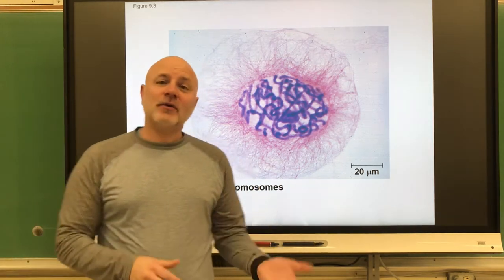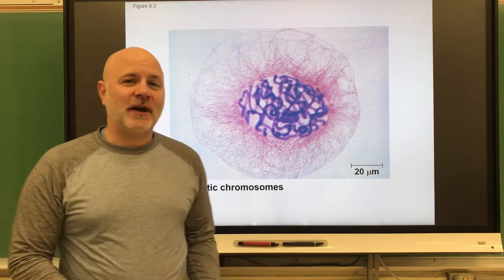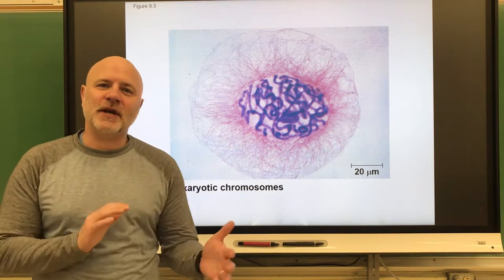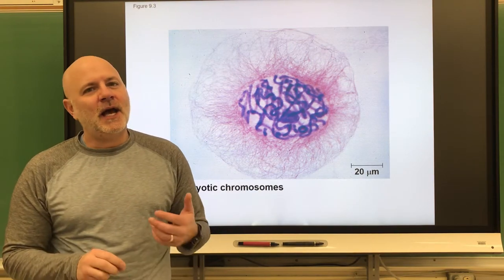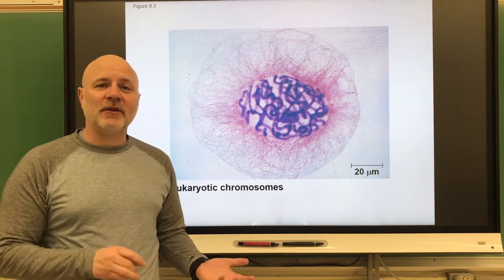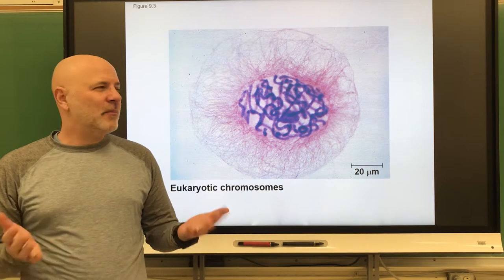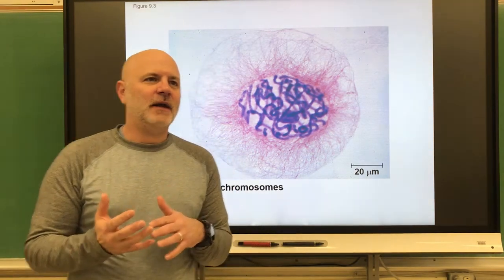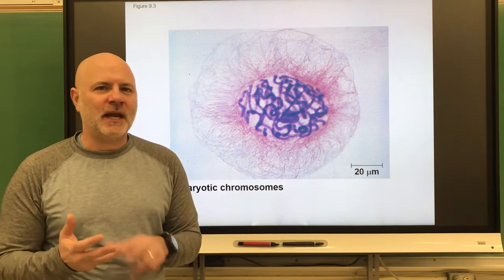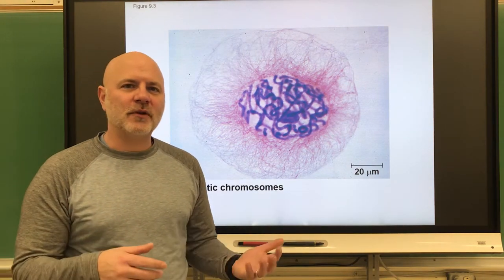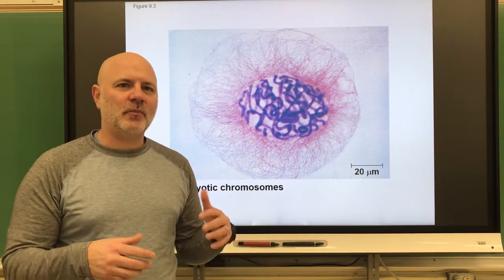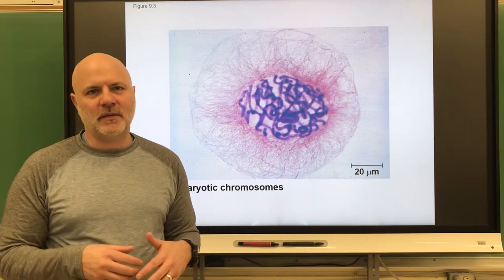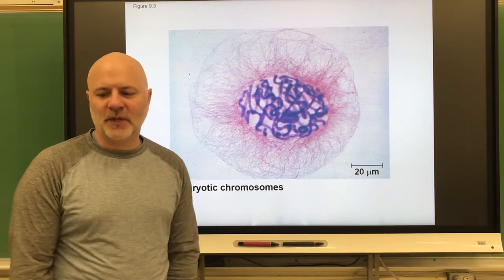Now let's look at eukaryotic cell division. Eukaryotic cells are cells with a nucleus. They can be single or multicellular. Most of the life that you're familiar with are eukaryotic cells — plants and animals, fungi, and protists. These are single-celled organisms like amoebas, or the thing that causes malaria.